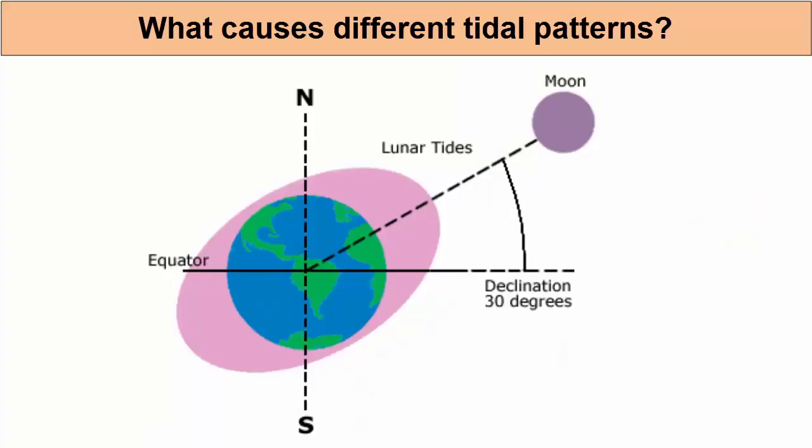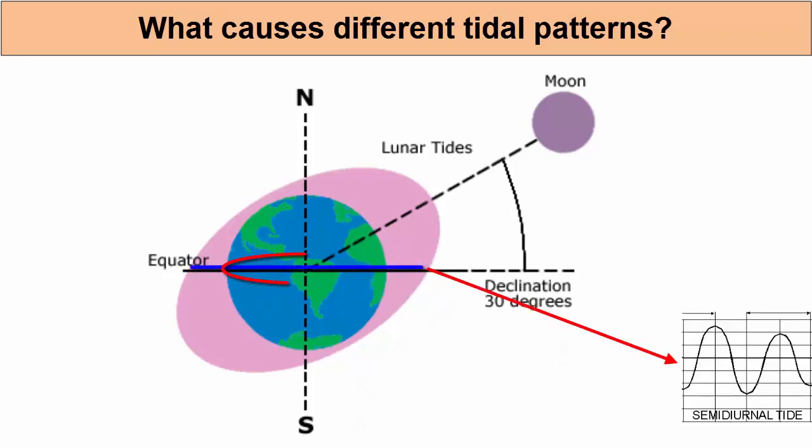How do we use the tidal bulge model to explain the variety of tidal patterns we find across the globe? This picture reminds us that while the Earth is orbiting the Sun and rotating through the lunar bulges, it is tilted at a 23.5 degree angle. So, if we are at the equator, we will rotate through two bulges of roughly the same water level and experience semidiurnal tides.